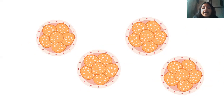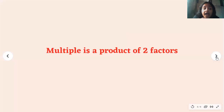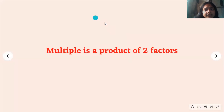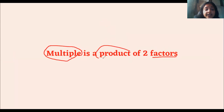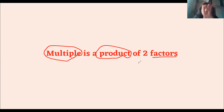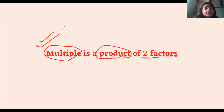Now we are going to see what actually a multiple is. A multiple is a product — a product of two factors. We all have learned about factors. Factors are the numbers that completely divide a bigger number. That product is called a multiple. When we multiply any two factors together, we get one multiple.